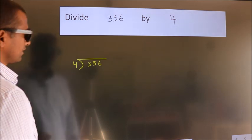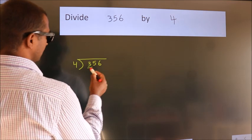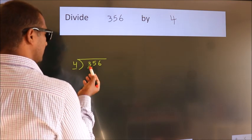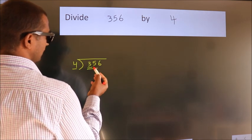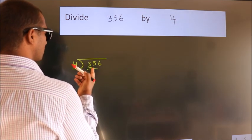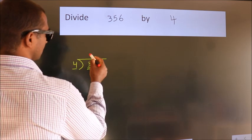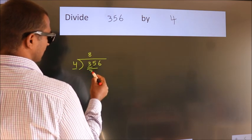Next, here we have 3, here 4. 3 is smaller than 4, so we should take 2 numbers: 35. A number close to 35 in the 4 table is 4 times 8, which is 32.